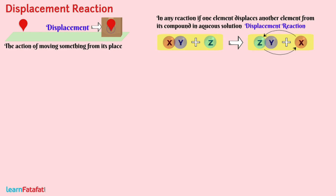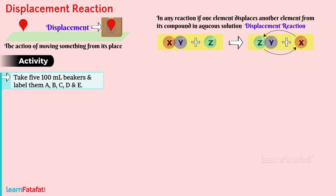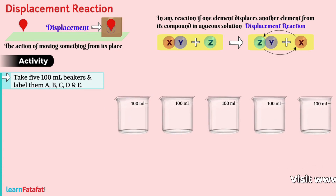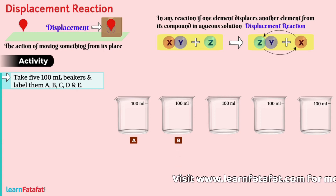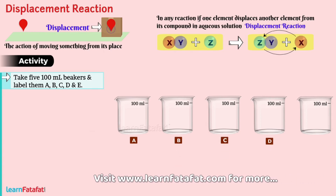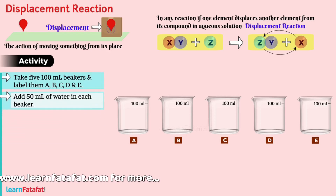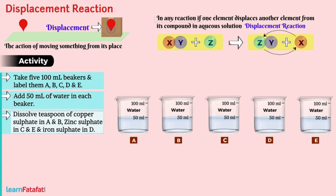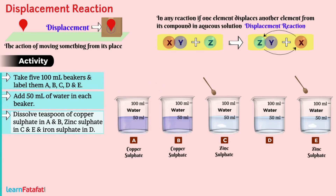Let's perform a quick activity. Step 1: Take 500 ml beakers and label them A, B, C, D, and E. Step 2: Add 50 ml of water in each beaker. Step 3: Dissolve a teaspoon of copper sulphate in A and B, zinc sulphate in C and E, and iron sulphate in D.